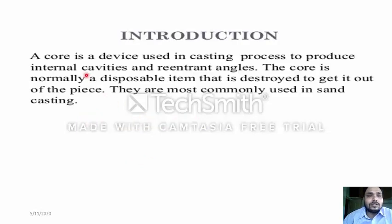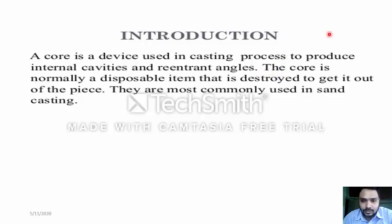What is a core? The core is a device used in the casting process to produce internal cavities and ring prints angles. Basically, the core is a part of casting which produces slots, internal holes, internal pillars, and more things as per the requirements of casting. The core is the product needed in the inner part, the inner interior of the product.